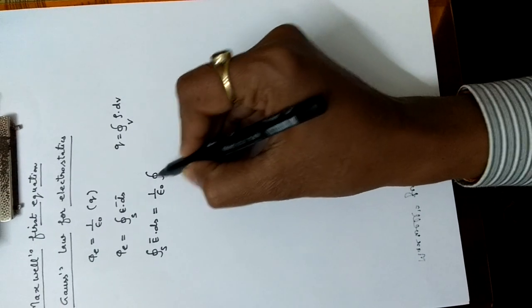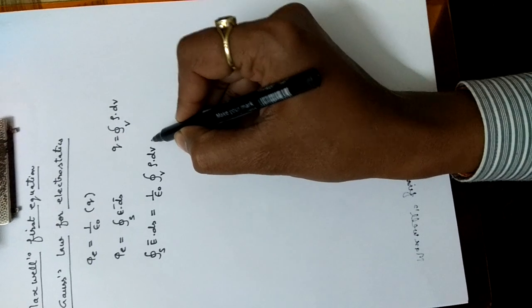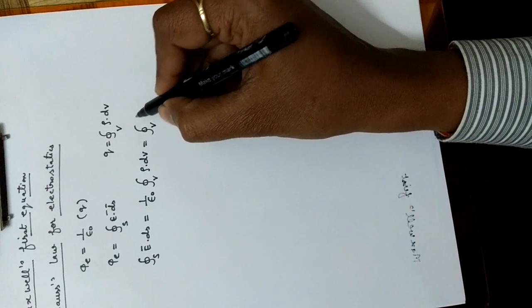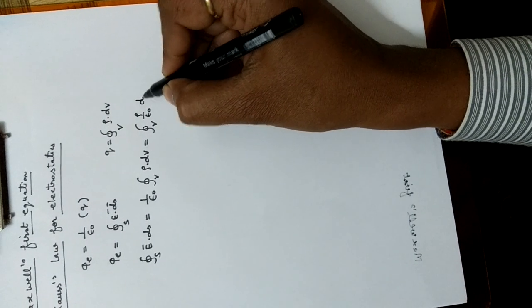Charge means volume integration of charge density, which we can write as volume integration of rho upon epsilon naught dv.